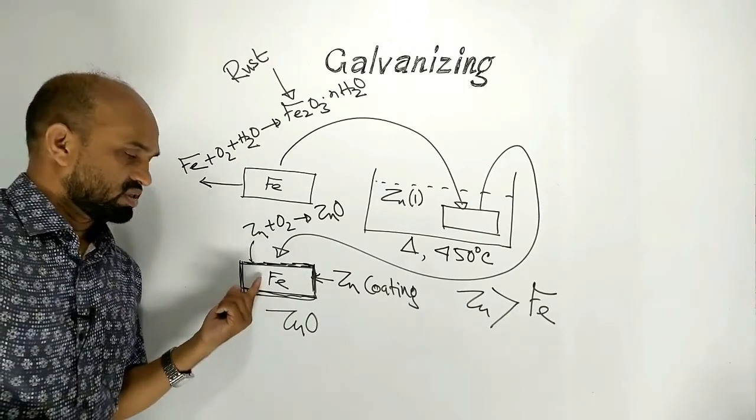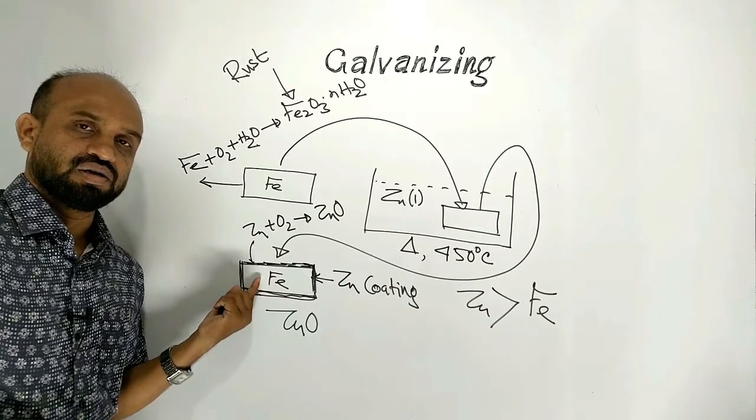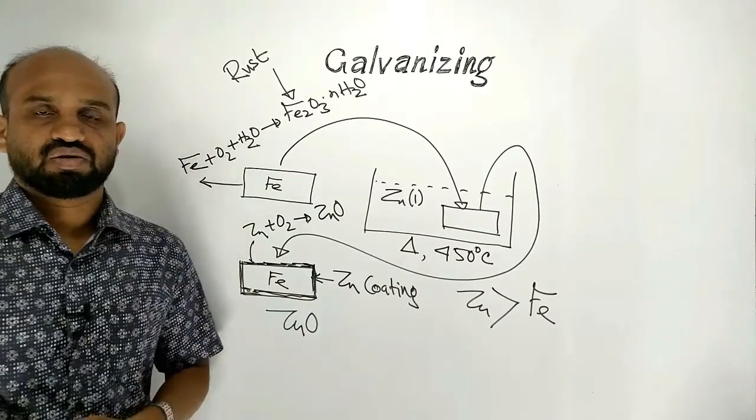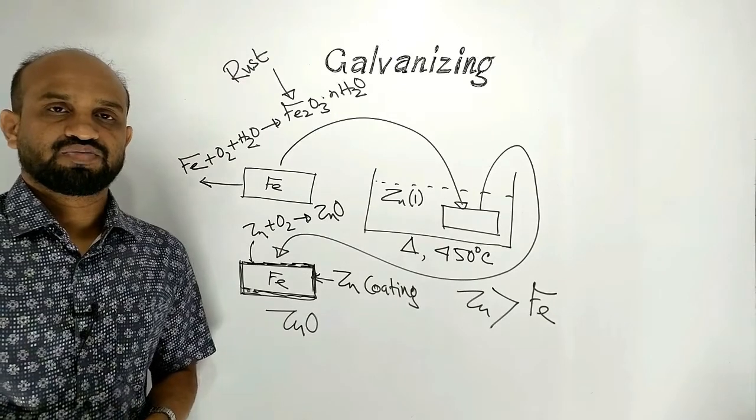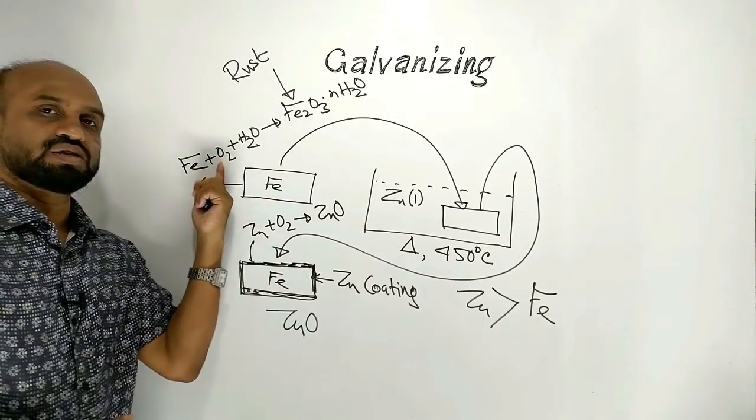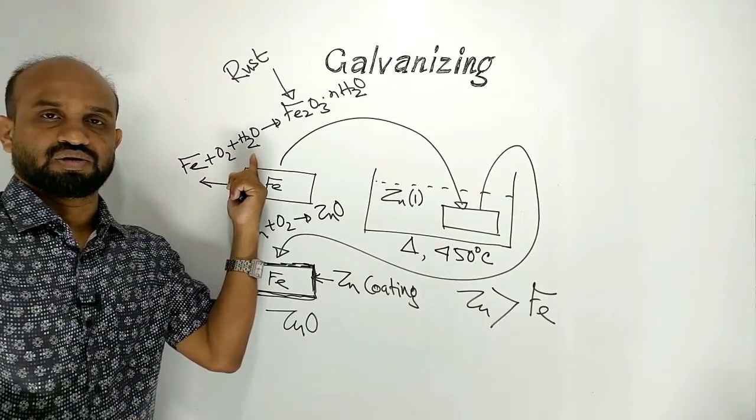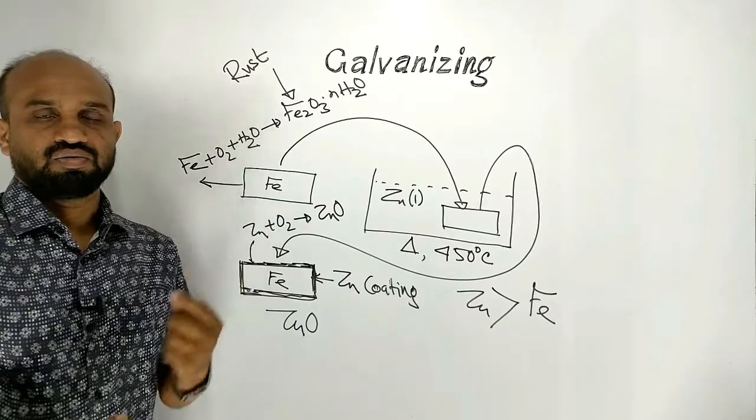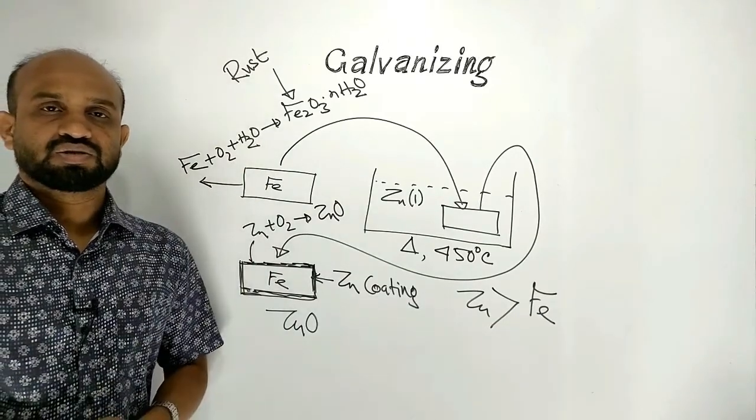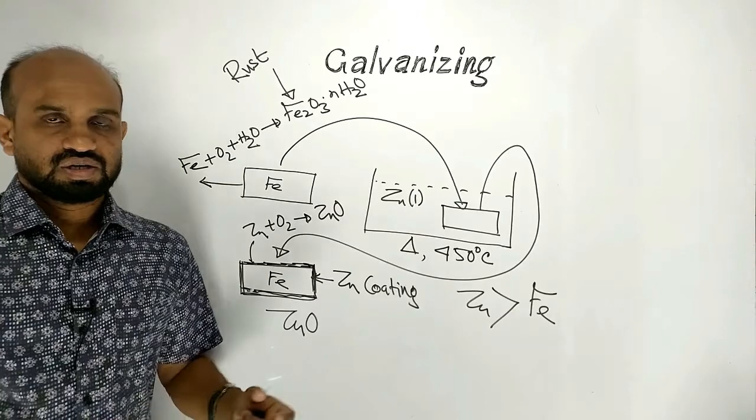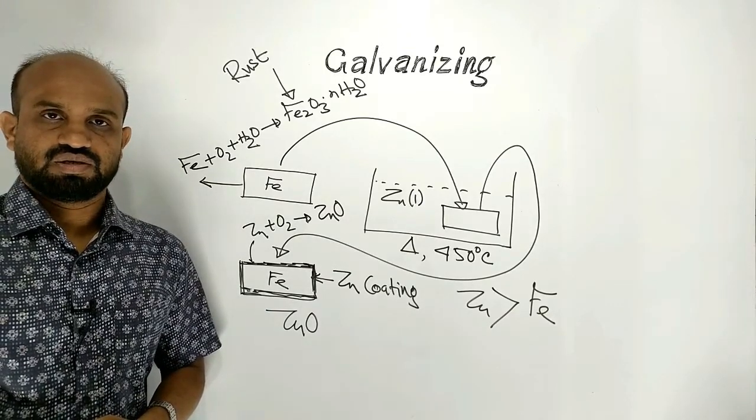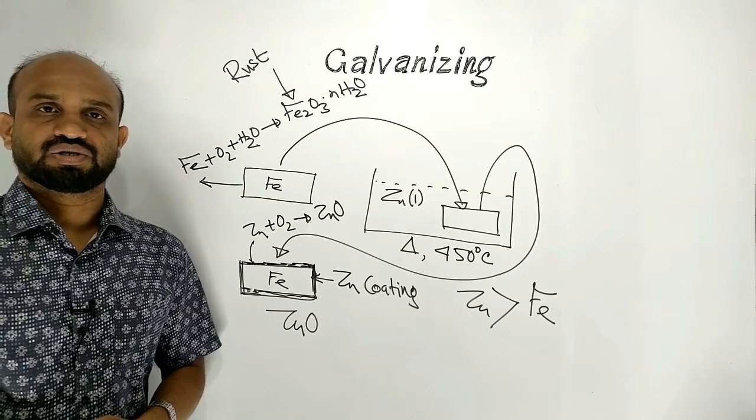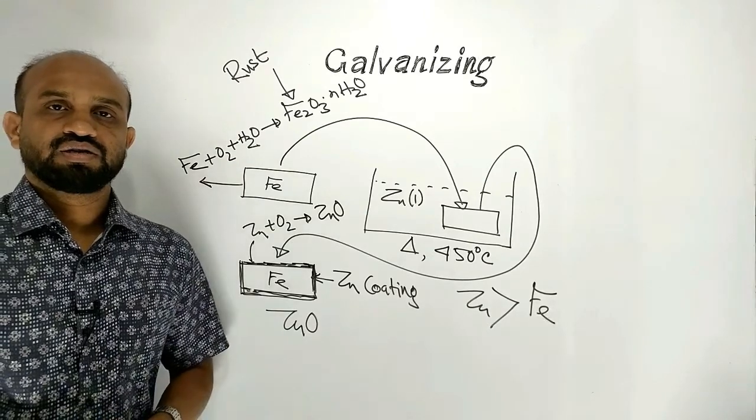When this article is layered with zinc oxide, then iron is protected from oxygen and water vapor or water. Now there is no chance to form rust. In this way rust formation is protected by the layer of zinc, ultimately zinc oxide.